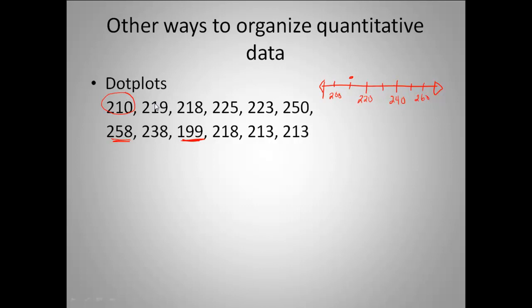210 would be a dot right there. 219 is going to be about there. 218 I'm going to put in a different color just so we don't confuse it with the 219. The 225 is going to go there, 223, 250, 258, 238, 199, 218. Now we have a 218 again. Since I already have a dot here at 218, that means I need to put a dot above it. And then 213, and I have another 213, so I'm going to put a dot above that again.